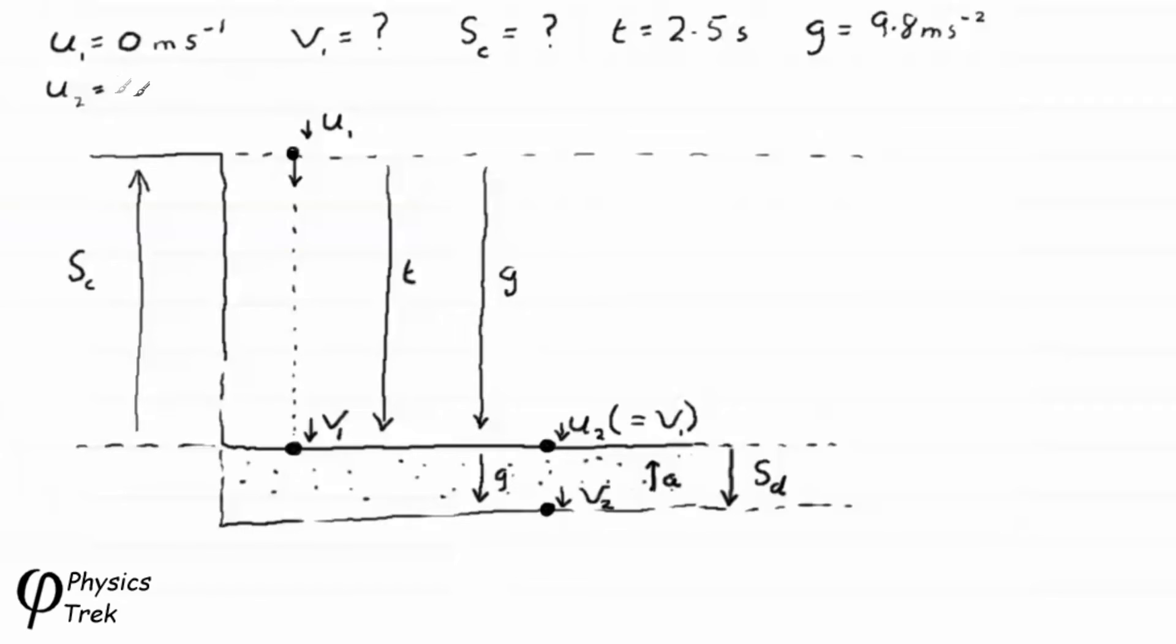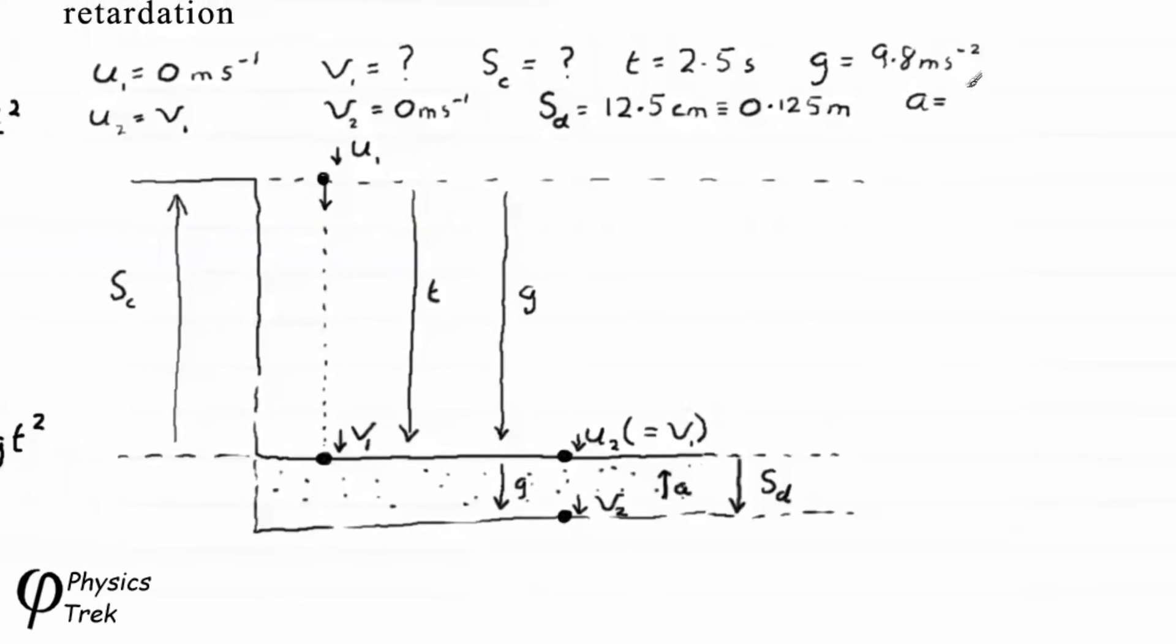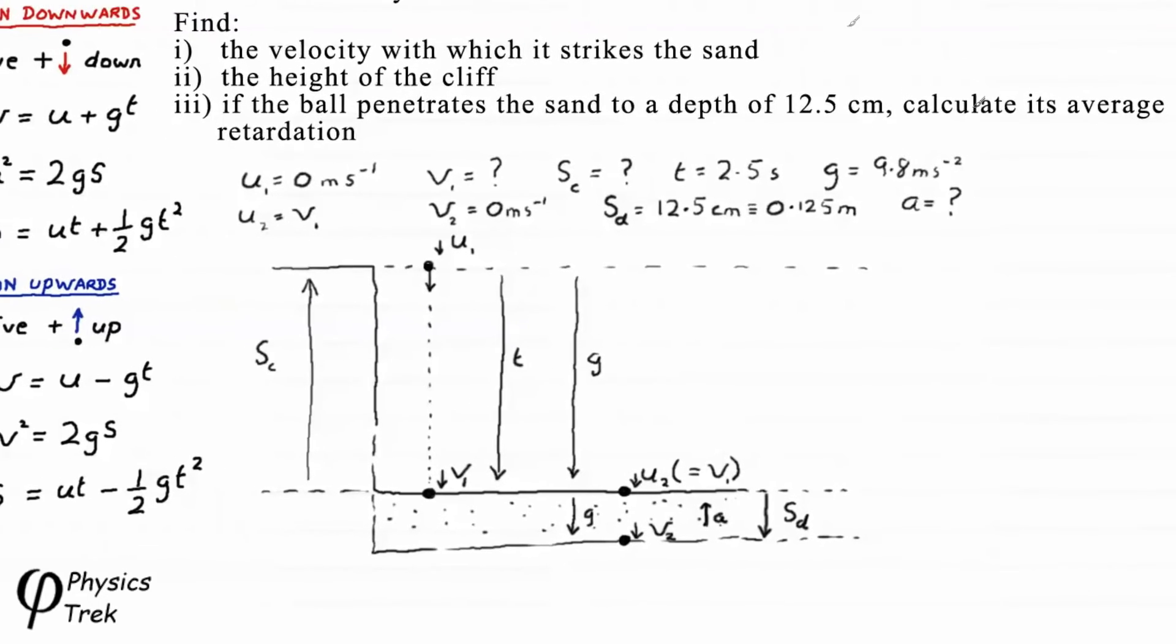U2, the final velocity in the sand is zero meters per second. Sd, the depth of the sand, is equal to 12.5 centimeters, which in meters is equal to 0.125. A is the retardation and we need to work that out.